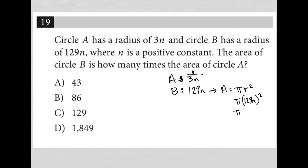When I put this in my calculator, 129 squared is 16,641. This becomes 16,641n squared. So there's my area for circle B.